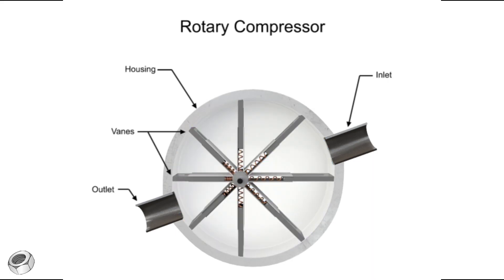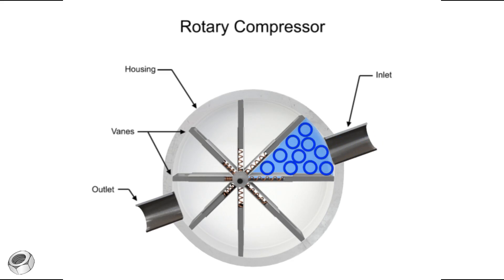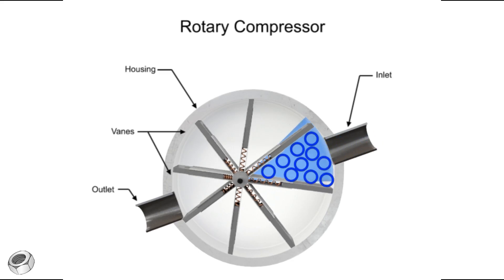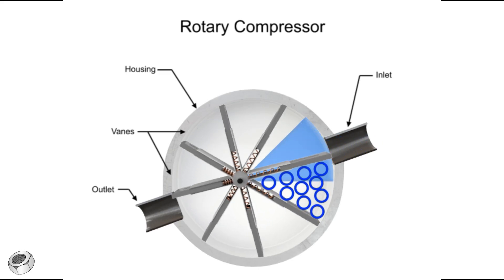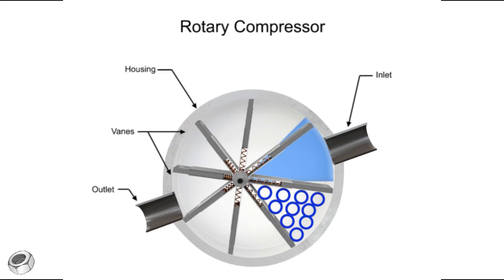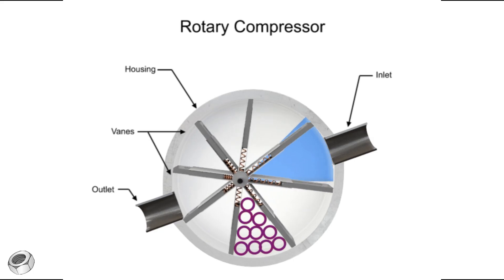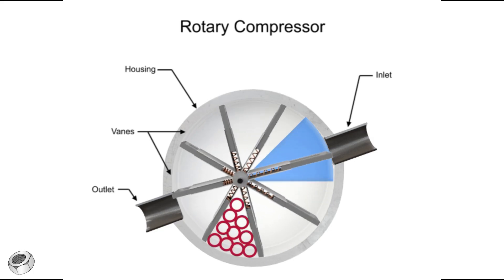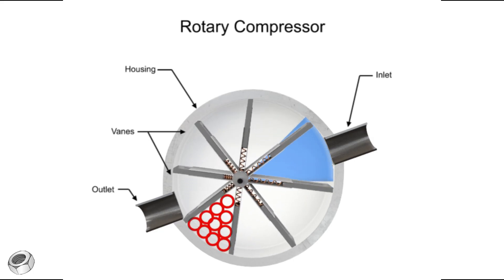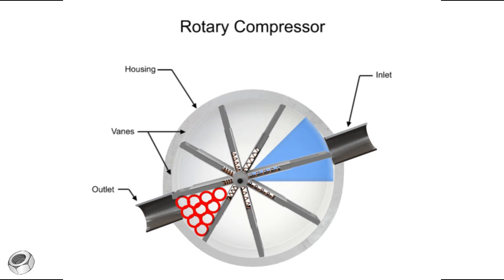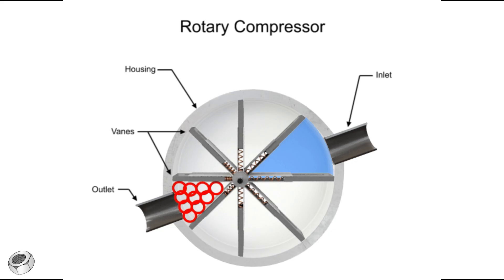Air enters at the largest chamber. As the vanes rotate, they retract, causing the chamber to get smaller and compress the air. Air exits at the smallest chamber.